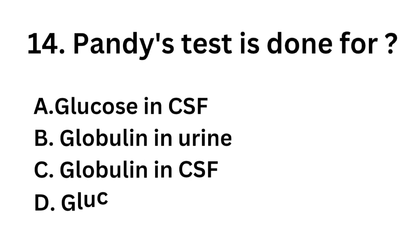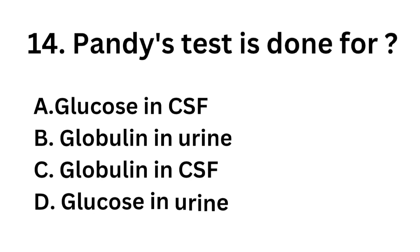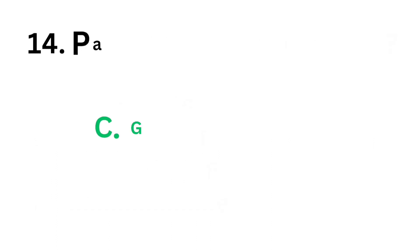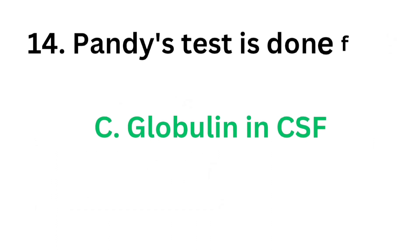Question number fourteen: Pandy's test is done for — option A: glucose in CSF, option B: globulin in urine, option C: globulin in CSF, option D: glucose in urine. The correct answer is option C, globulin in CSF. Pandy's test is done for globulin in cerebrospinal fluid.